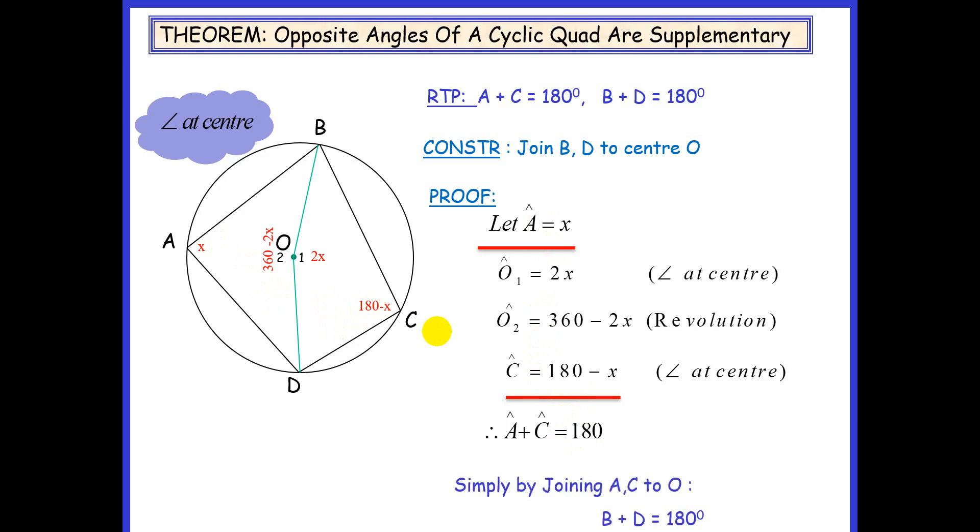Now, in the same way, by joining A to O and C to O, we can prove that B plus D equals 180 degrees.